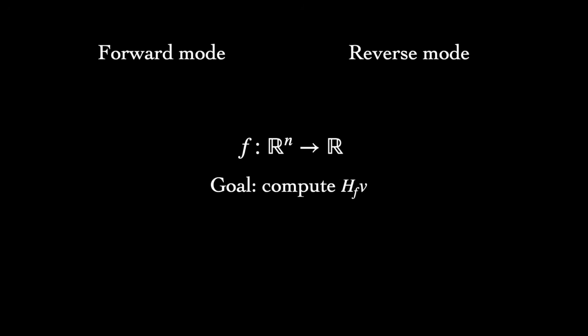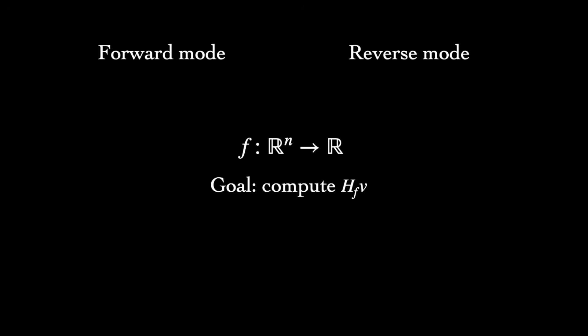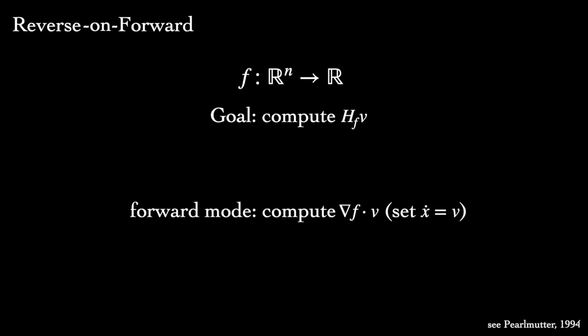Forward and reverse-mode are the two extremes of automatic differentiation. But in some settings, a hybrid approach is actually preferred. For example, in second-order optimization, where information about an objective function's curvature is taken into account, a Hessian vector product is sometimes needed. A reverse-on-forward version of autodiff allows efficient computation of this product. First, we use forward-mode to compute the directional derivative gradient f times v by setting x dot to v, as we did before. Then, reverse-mode is used to differentiate again, resulting in the Hessian times v. As with the Jacobian vector product, we're able to compute the Hessian vector product without explicitly computing the Hessian matrix itself. In general, we can compute arbitrarily higher-order derivatives by composing multiple executions of autodiff together.